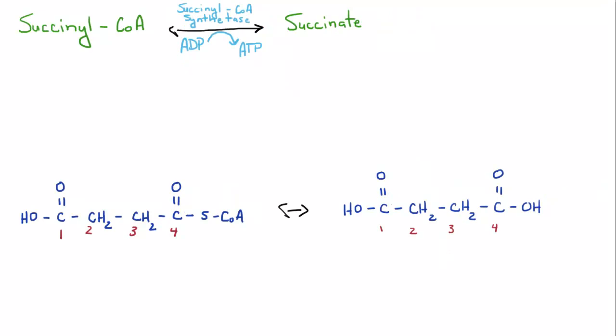In the next step, succinyl coenzyme A is going to be broken down to coenzyme A and succinate. This is an exergonic reaction, which means it's going to release energy. And this is going to drive the synthesis of ADP to ATP. Actually, first it forms a molecule called GTP, and then GTP transfers its phosphate group to ADP. But all you need to know is that during this step, ATP is formed.